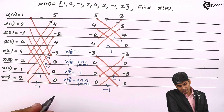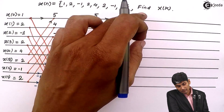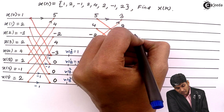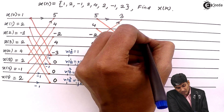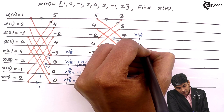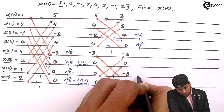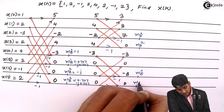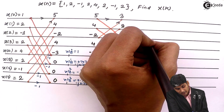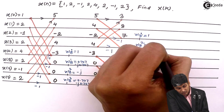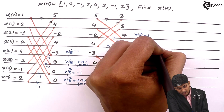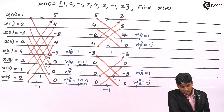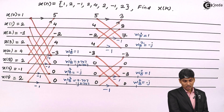Now let us put multipliers for the third stage. The multipliers are on the upper section and the lower section. For the upper section, the multipliers are W8 raised to 0 and W8 raised to 2. For the lower section also W8 raised to 0 and W8 raised to 2. W8 raised to 0 is 1 and W8 raised to 2 is minus j, for both sections.